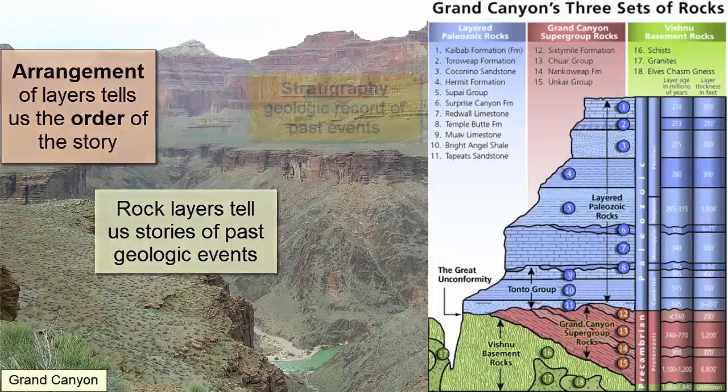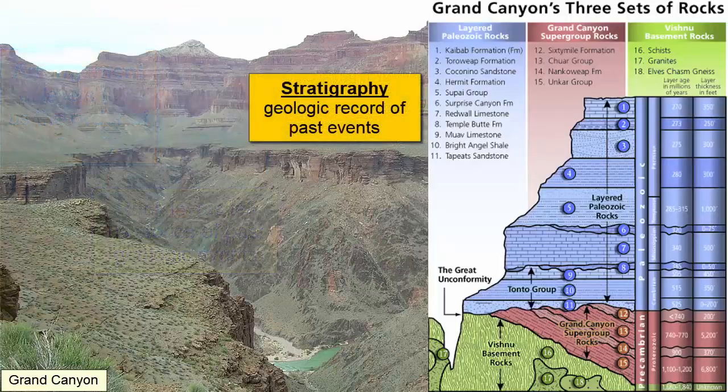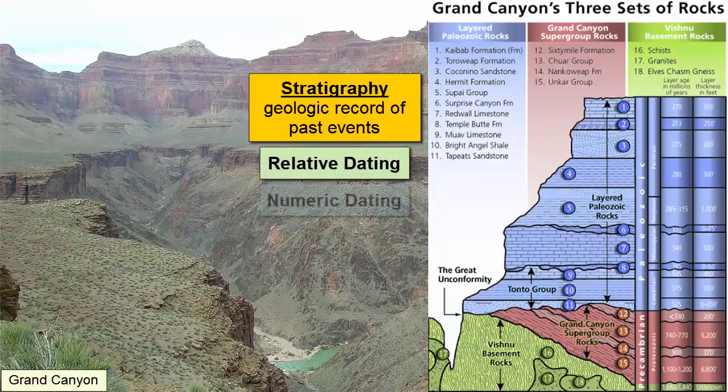Once we piece together a geologic record of past events, or stratigraphy, we can tell the story of an area's geologic past. We determine the order of events through a combination of two different processes: relative dating and numeric dating.